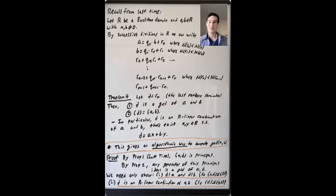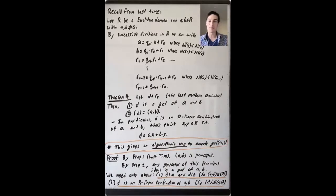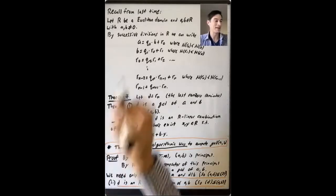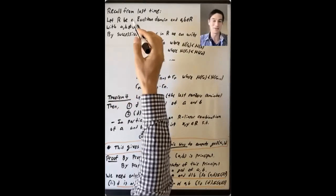In this video, we want to connect Euclidean domains and GCDs. We're going to start by recalling from last time what happens when you apply successive divisions in a Euclidean domain. So what does that look like?